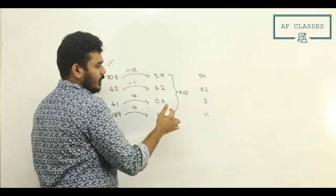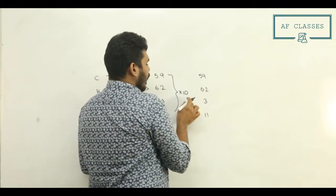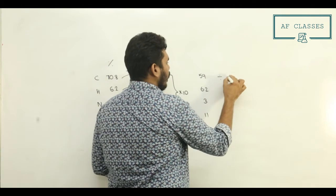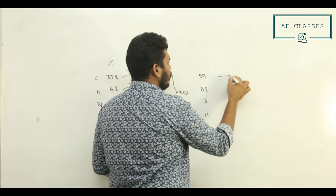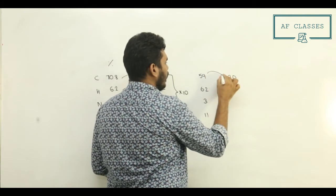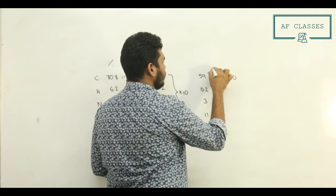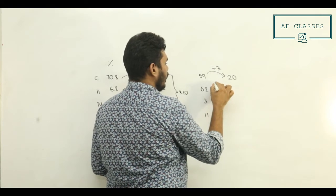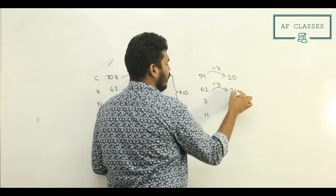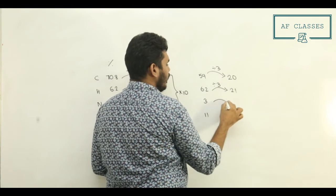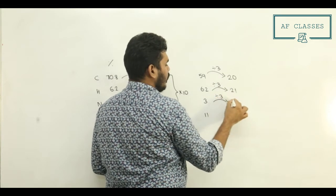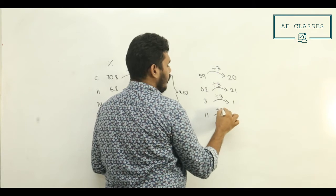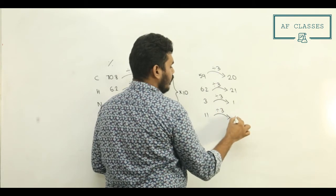Taking the smallest fraction as one, we divide all values by approximately 0.3. So: 5.9 divided by 0.3 gives around 20, 6.2 divided by 0.3 gives around 21, 0.3 divided by 0.3 gives 1, and 1.1 divided by 0.3 gives approximately 4.